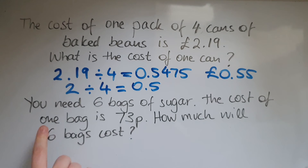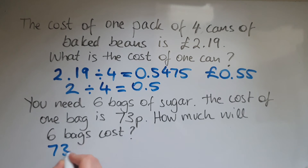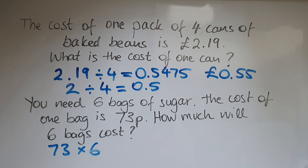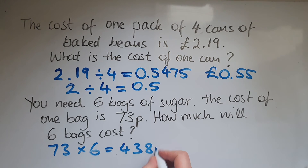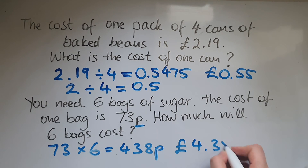Looking at the other question: you need six bags of sugar, the cost of one bag is 73 pence — how much will six bags cost? Again this is asking for an exact figure, so I need to do 73 times 6, and that gives me 438 pence, which is also £4.38.